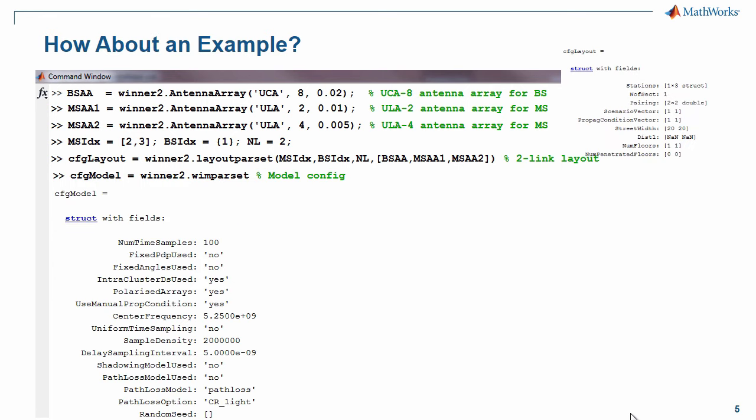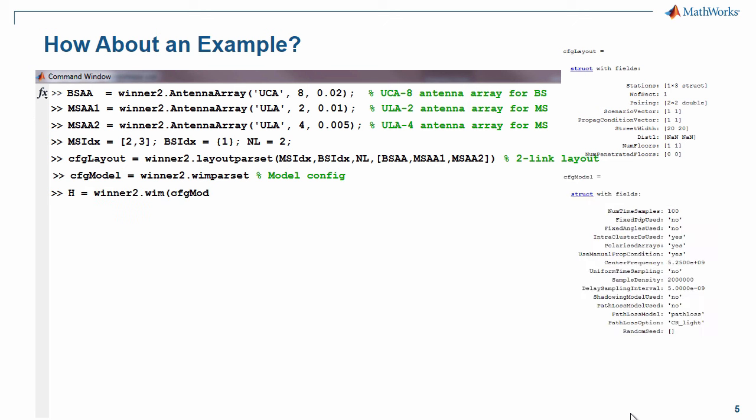Then, you can create your model configuration using winner2.wimParset without any arguments. Here is the output structure. Here's how you would generate the channel coefficients using the winner2.wim function. Note that the coefficients are in a cell array with a length equal to the number of links. Each element of the cell array is a 4D array that accounts for the number of receive antennas, the number of transmit antennas, the number of multi-paths, and the number of time samples.